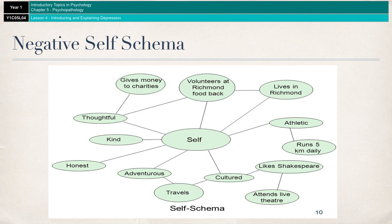Put very simply, a self-schema is how you see yourself and how you think others see you. If that view is negative, not only are you going to judge yourself very negatively, but you're going to assume that other people are also judging you very negatively, which will lead to you misinterpreting or distorting information that comes in.